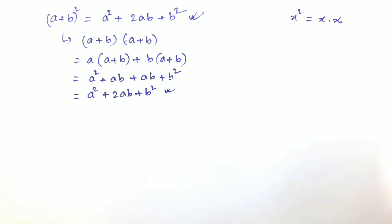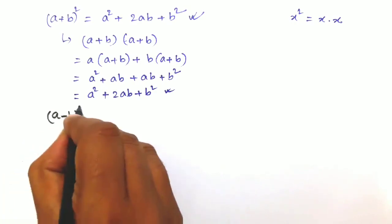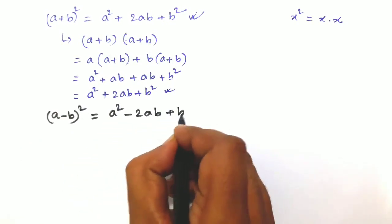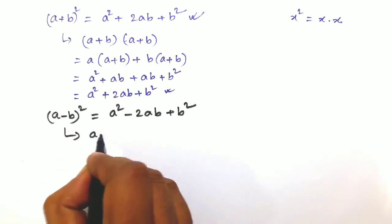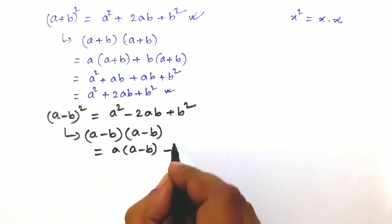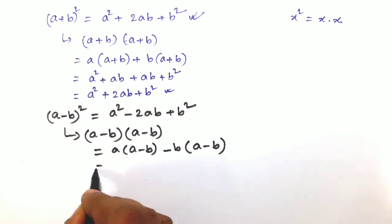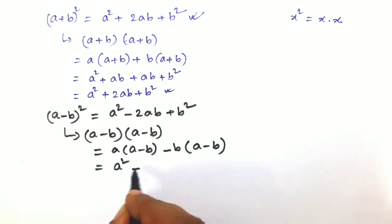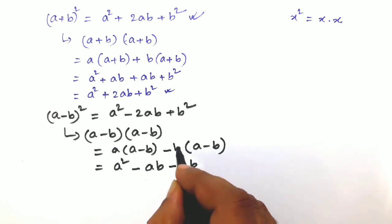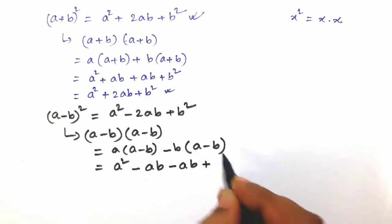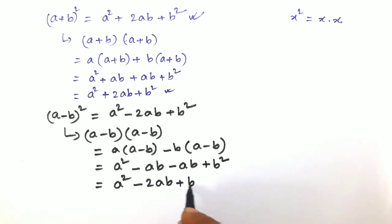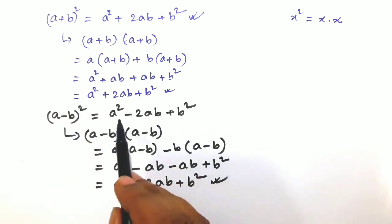The next formula is (a − b) whole square, which you also know from class 7: a² − 2ab + b². Again using the distributive property: (a − b)(a − b) gives a(a − b) − b(a − b). Multiplying: a² − ab − ab + b² (since negative × negative = positive). So (a − b)² = a² − 2ab + b².